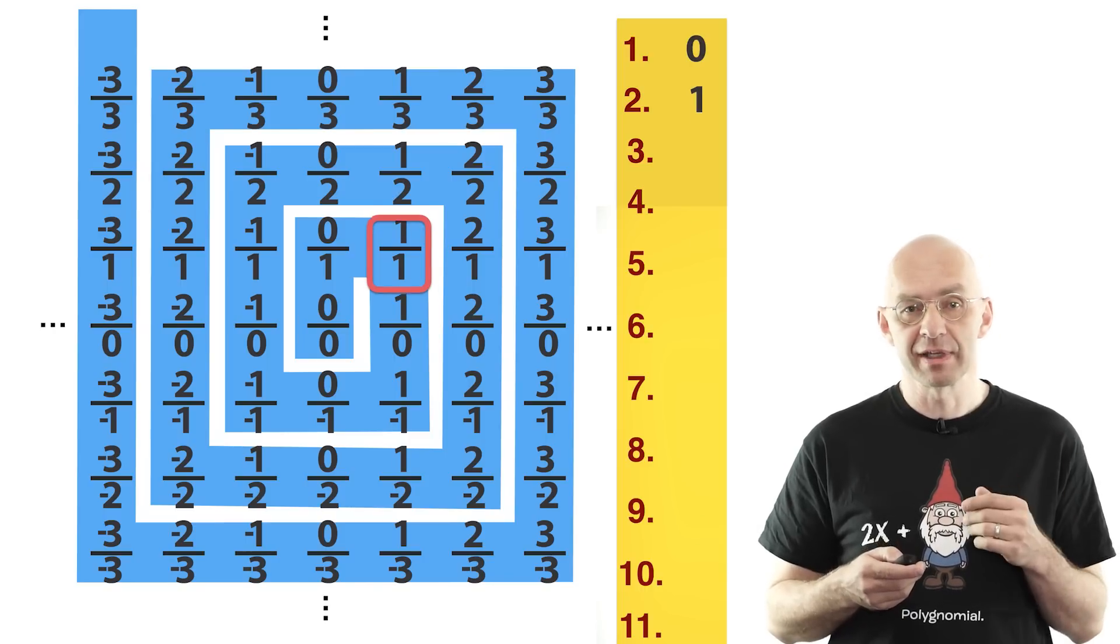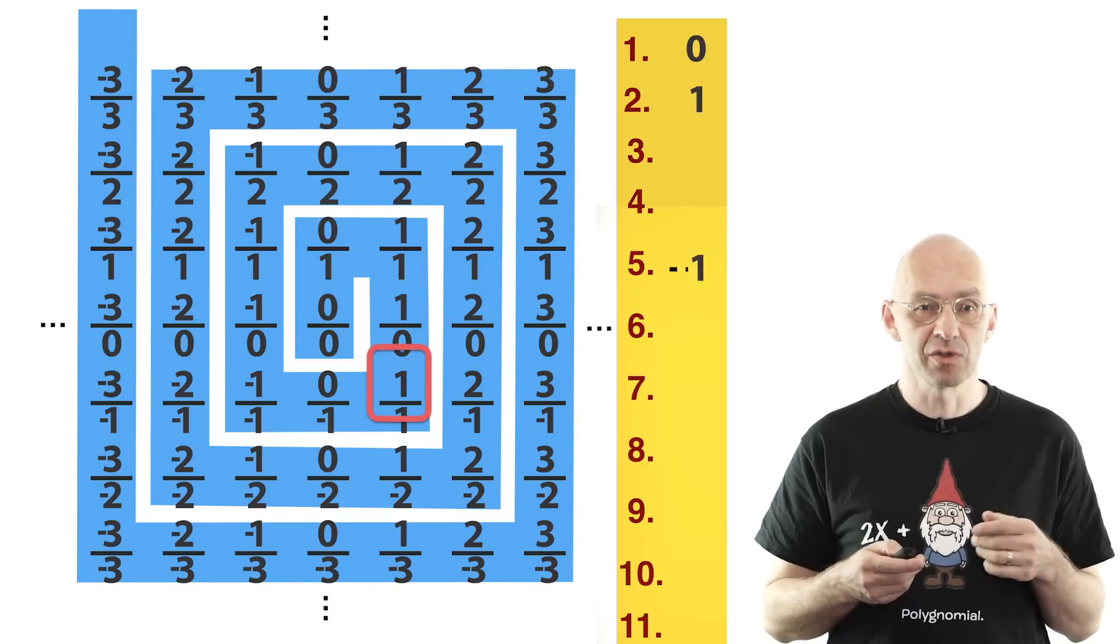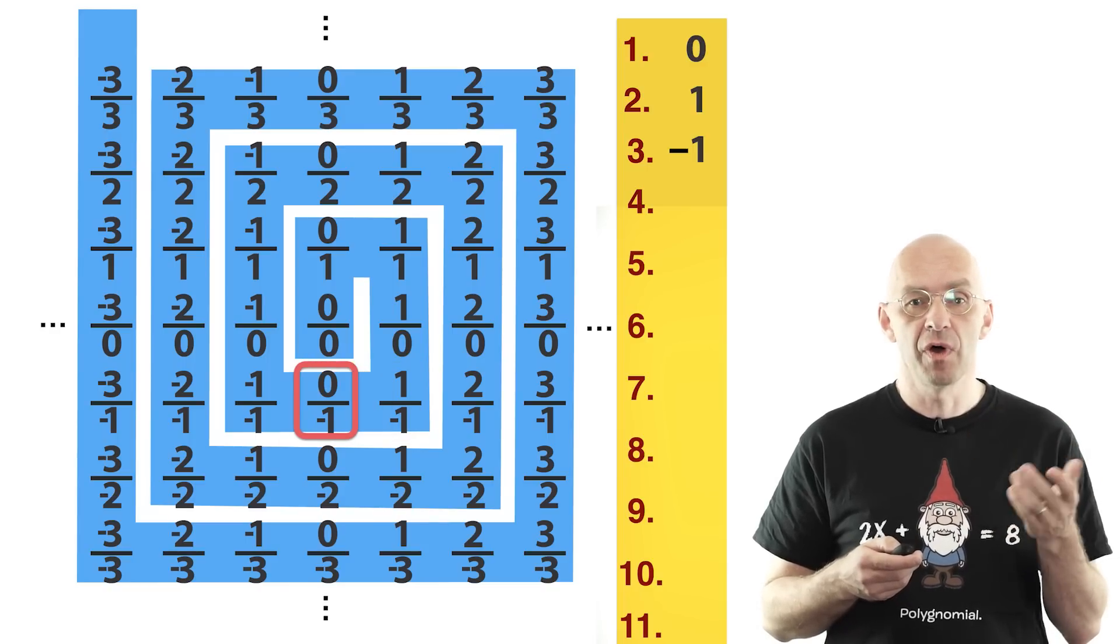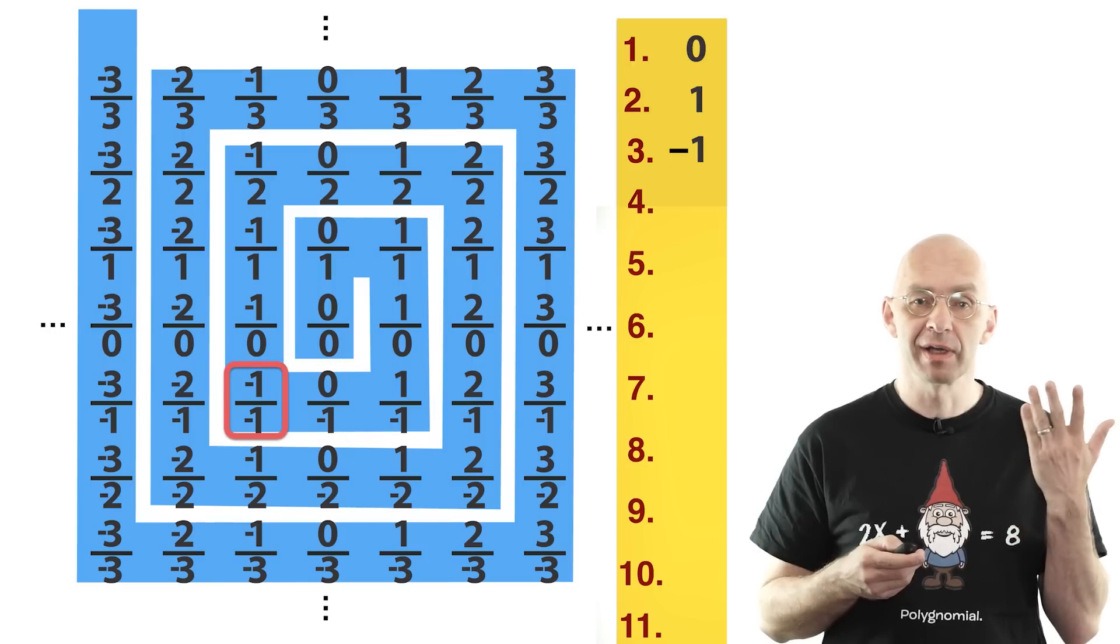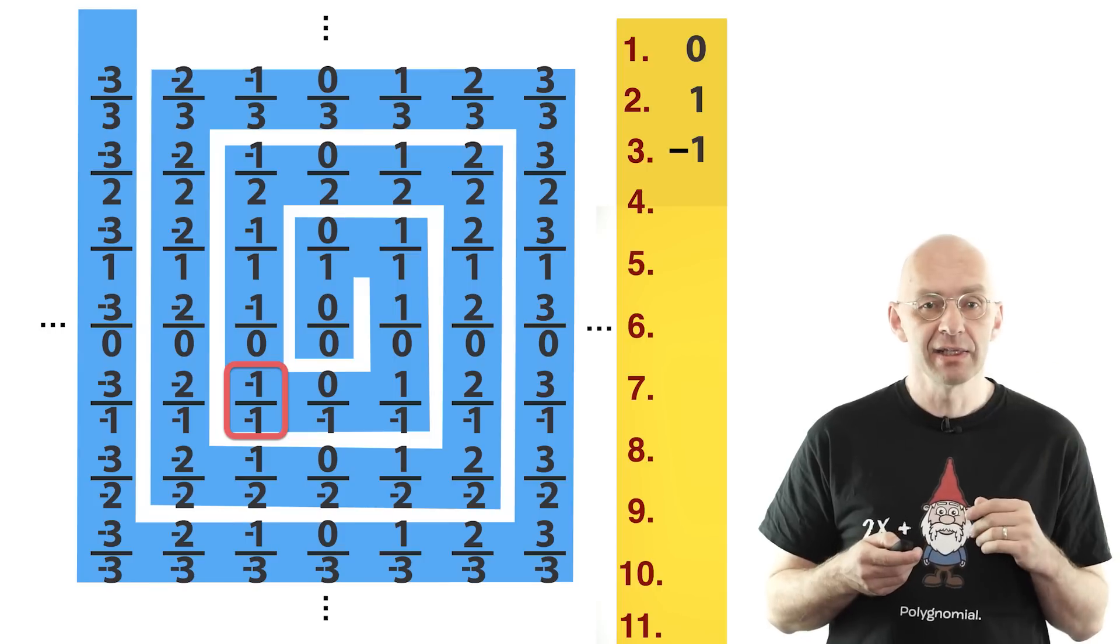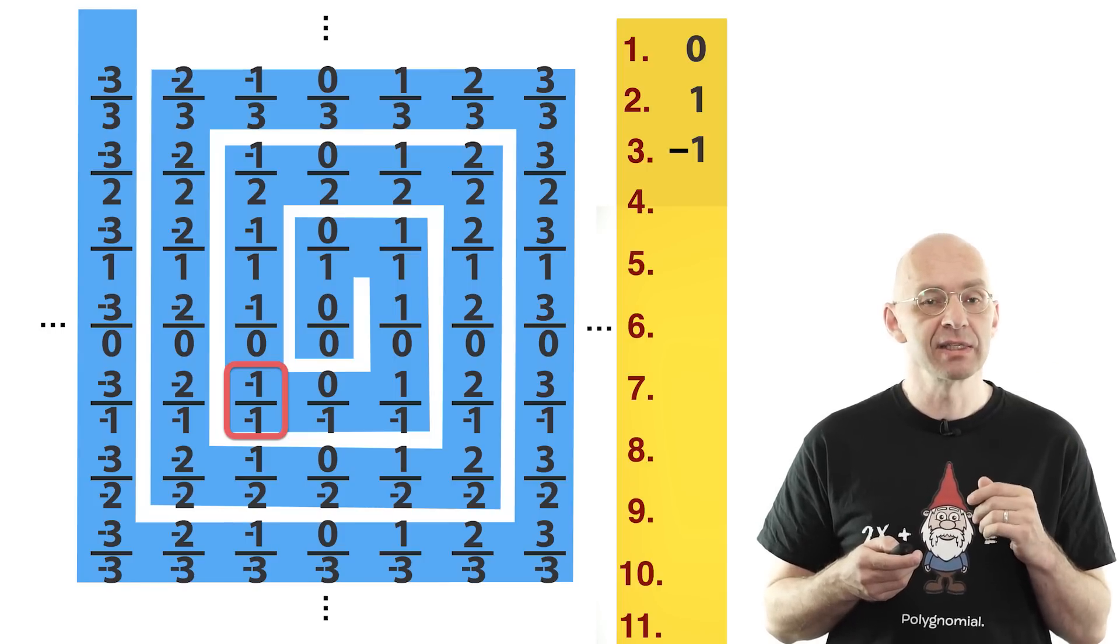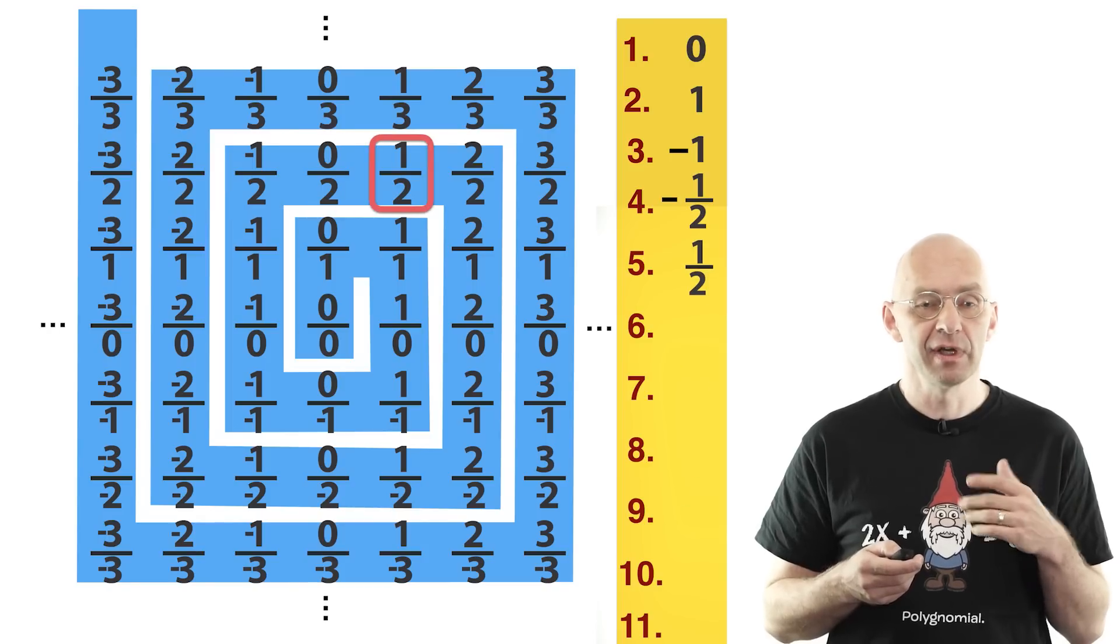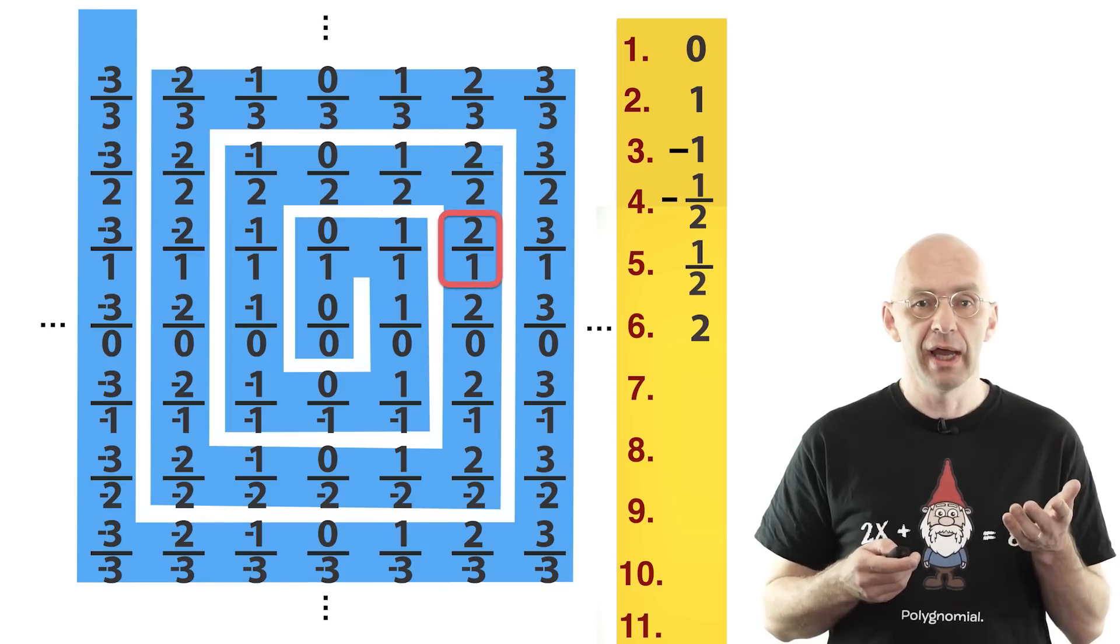Forget about 1 divided by 0. Next is minus 1, and then there's 0 but we already listed 0, so we move on to minus 1 divided by minus 1, that's 1, which we've also got already. Now skipping ahead, the next number we have not seen yet is minus 1 half. Okay, then 1 half, then 2, and so on.